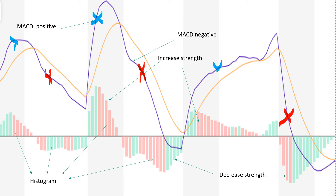We will have the strongest upward trend when the MACD sign is positive and the histogram bars are above the zero line — as seen in several areas on the chart. Similarly, we will have the strongest downward trend when the MACD sign is negative and the histogram bars are below the zero line, as visible in several downward areas on the chart.